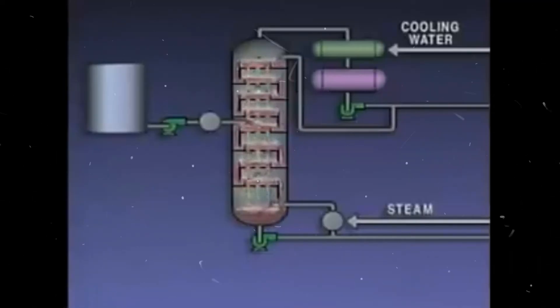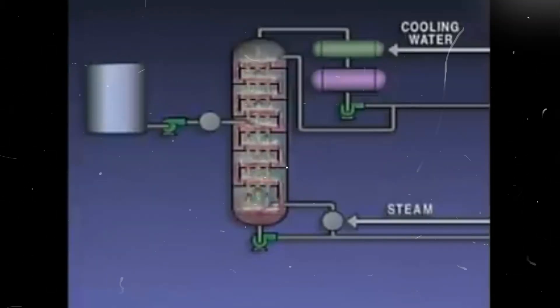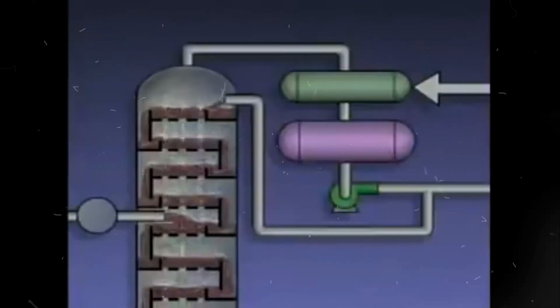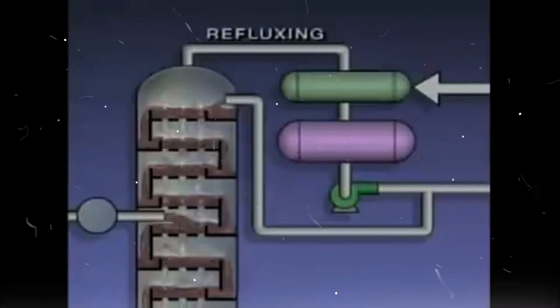If a distillation tower worked perfectly, it would produce pure products. Unfortunately, that's not the case. The lighter products usually contain some heavier fractions, and the heavier products usually contain some lighter fractions. This is sometimes referred to as overlap. Distillation systems use several methods to help maximize the purity of the products. One of these methods is called refluxing.